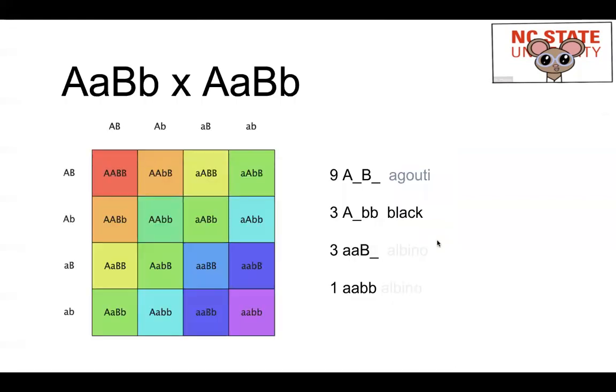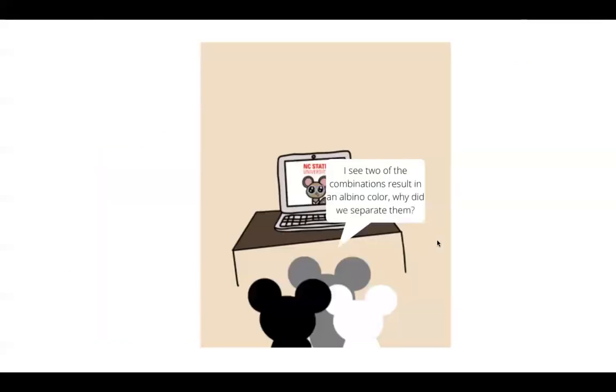Since the pathway can get kind of confusing, let's think about it like a dihybrid cross. Since you would be crossed with someone of the same gene sequence, the cross would look something like this. As you can see, both loci are heterozygous, and based on a dihybrid cross, you would come up with a ratio of 9 to 3 to 3 to 1. I also showed you what colors would appear based on the outcome. I see two of the combinations result in an albino color. Why do we separate them?